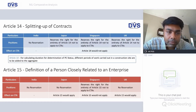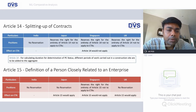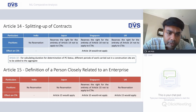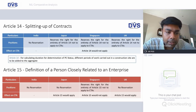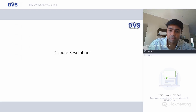Article 14 on splitting up of contracts: India has not made any reservation, but Japan, Singapore, and UK have all reserved their positions. Therefore, Article 14 will not apply to the DTAs between these three countries. Article 15 on the definition of a person closely related to an enterprise: India, Japan, and UK have not made any reservation, so Article 15 shall apply. Singapore has reserved, so Article 15 will not apply as far as Singapore is concerned.